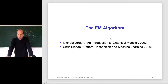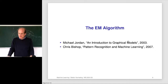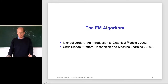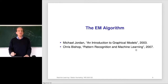Let's talk about the EM algorithm. There's a nice script from Michael Jordan — not the basketball player, but the Berkeley professor for statistics and machine learning. He wrote a nice introduction to graphical models with a great description of the EM algorithm. There's also Chris Bishop's book 'Pattern Recognition and Machine Learning' from 2007, which is a very good introduction. I'm following mostly the Bishop book, and for the more general point of view, I'm following Mike Jordan's description.